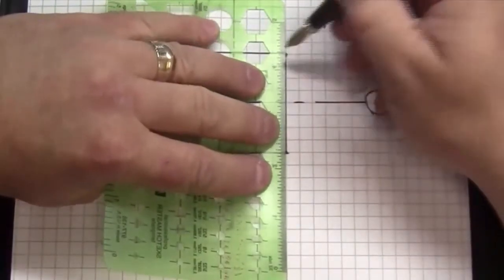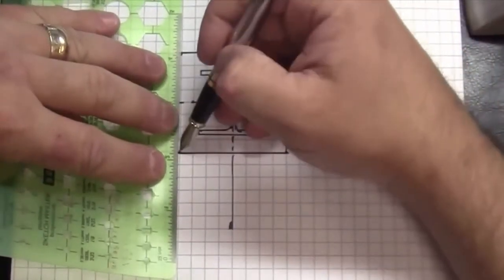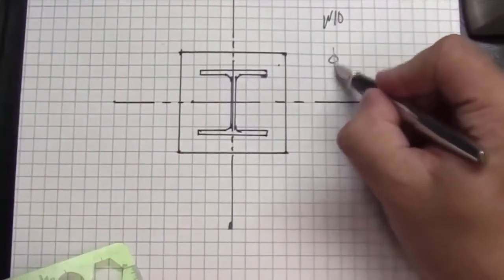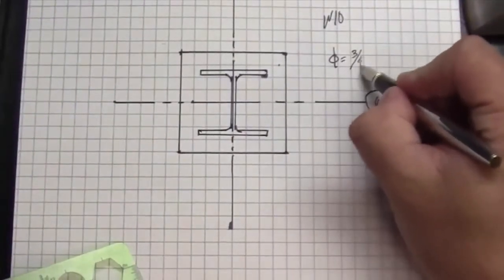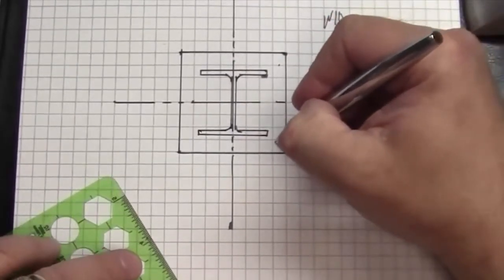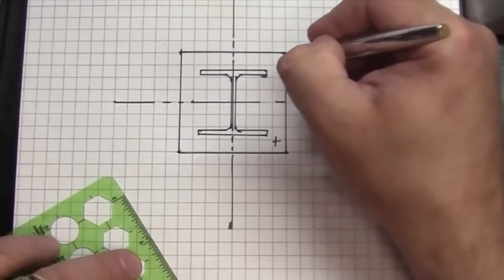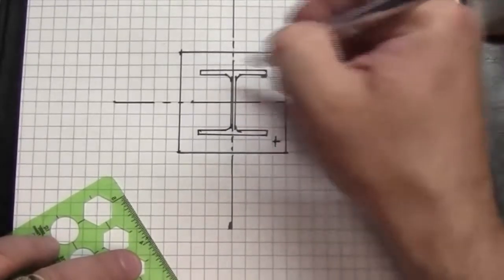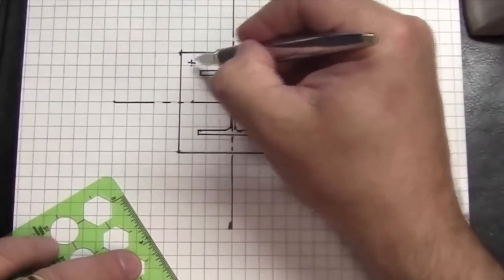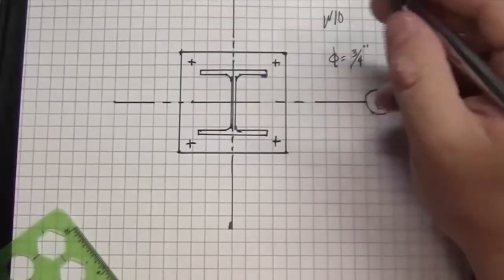The anchor rods on a low rise building in the imperial system are probably going to be something on the order of three quarter inch diameter if they're just gravity. If I were to come an inch in each direction, just for quick talking purposes, each square is two inches so I'm coming a little in off the square. I'm just going to put little X's right there. That's showing me where the center line of the anchor rods are.